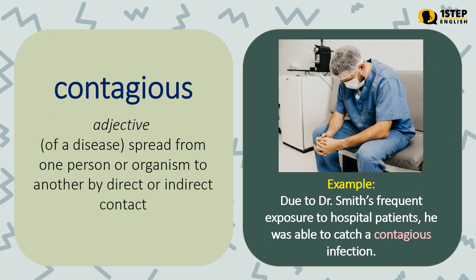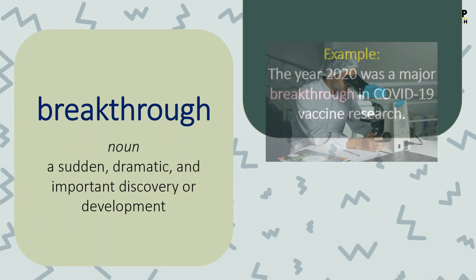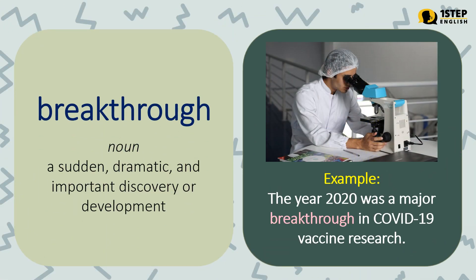Contagious — adjective: of a disease, spread from one person or organism to another by direct or indirect contact. Breakthrough — noun: a sudden, dramatic, and important discovery or development. Example: the year 2020 was a major breakthrough in COVID-19 vaccine research.